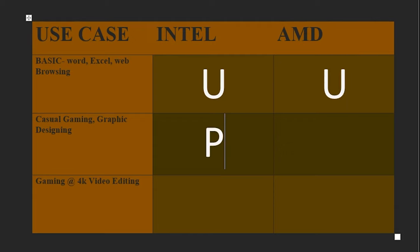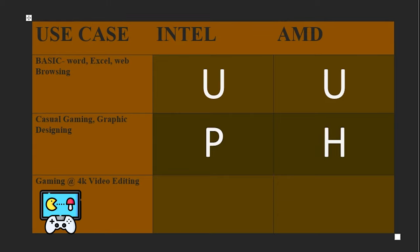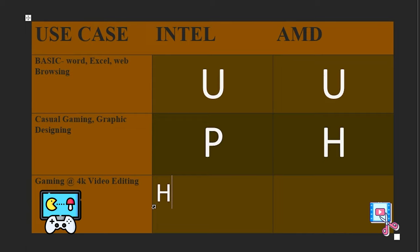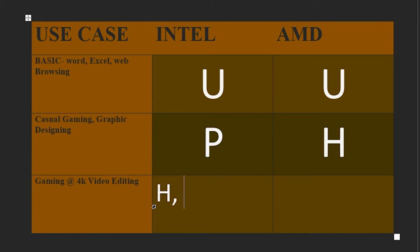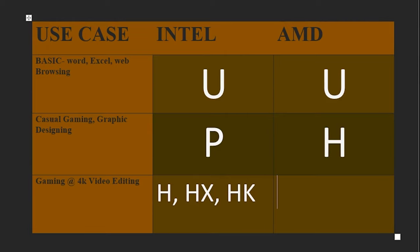For 1080p graphics design, you can use Intel P-Series. For heavy gaming at 4K, you can use Intel H-Series, HX, and HK processors. AMD also offers H-Series and HX processors for these demanding tasks.